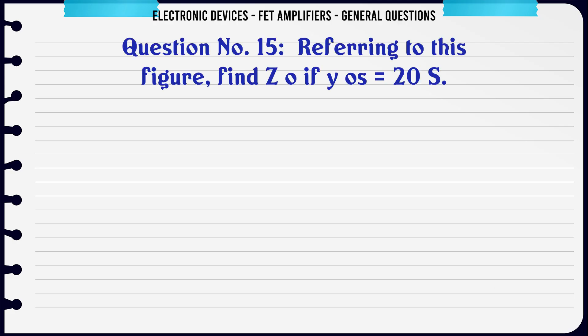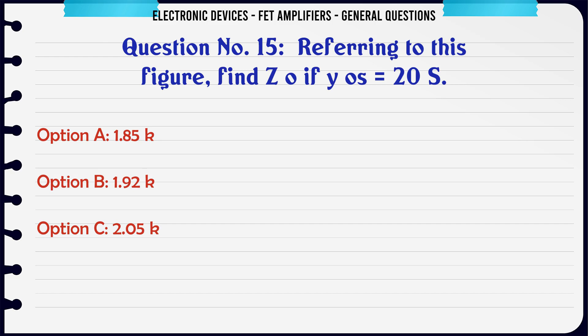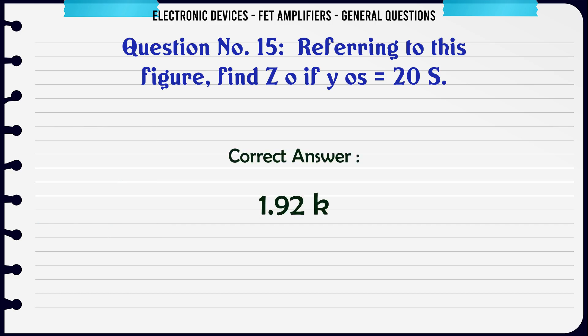Referring to this figure, find ZO for YOS = 20µS. A. 1.85K. B. 1.92K. C. 2.05K. D. 2.15K. The correct answer is 1.92K.